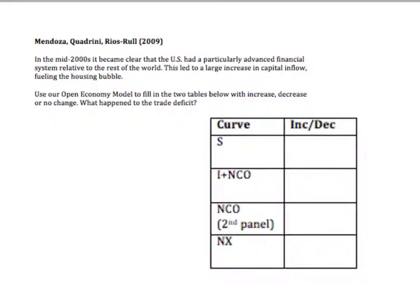This last question is based on a paper written by three international finance economists, Mendoza, Quadrini, and Rios Rol. They develop a really complicated model of how the U.S. could have a more advanced financial system, and that can draw in a lot of capital inflow. Let's just analyze the effect. We'll take as given that there's going to be a large capital inflow to the U.S., and let's analyze what the macroeconomic effects of that are going to be.